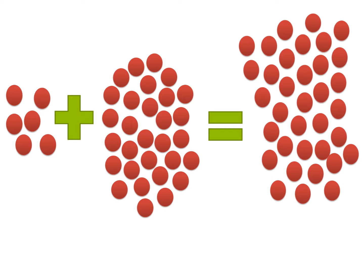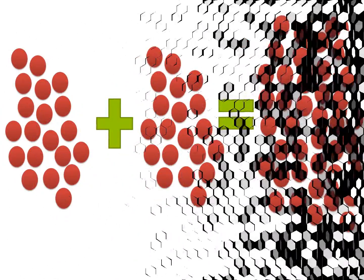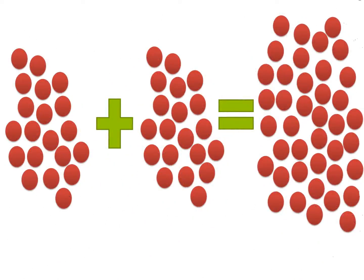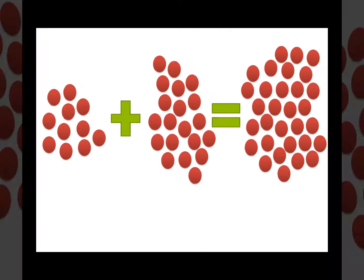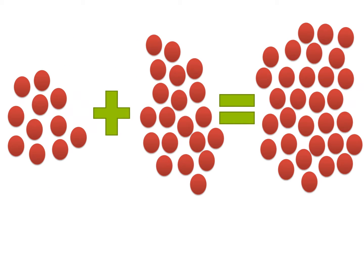6 plus 30 equals 36. 20 plus 20 equals 40. 11 plus 20 equals 31.